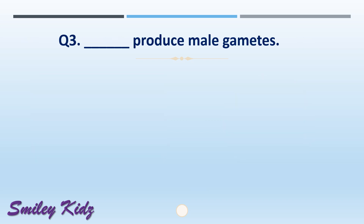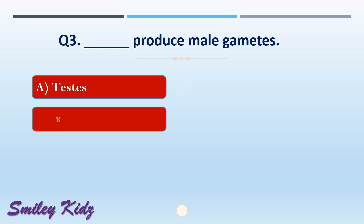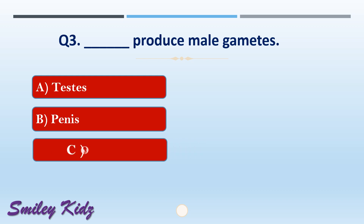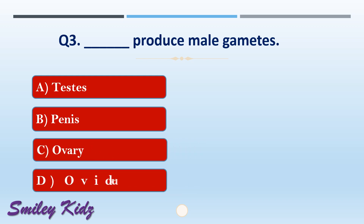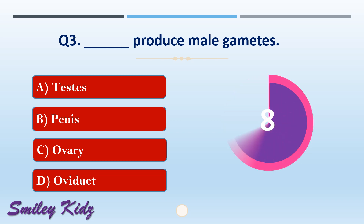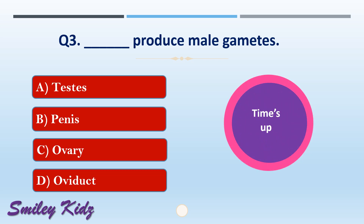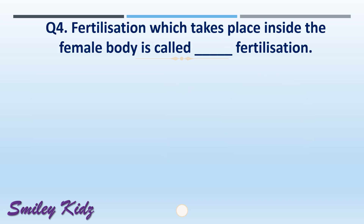Question number three: dash produce male gametes. The options are: A) testis, B) penis, C) ovary, or D) oviduct. The right answer is option A, testis. Testis produce male gametes.